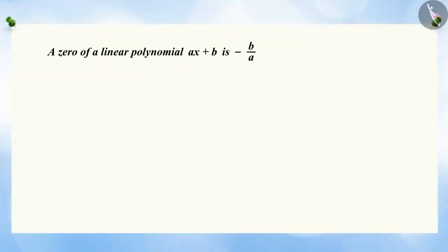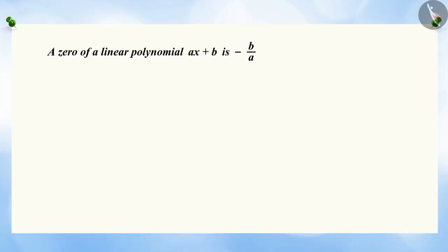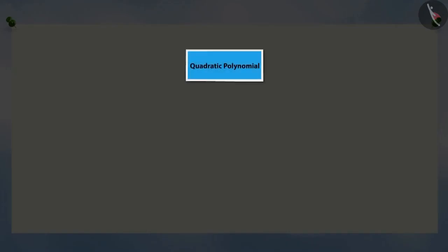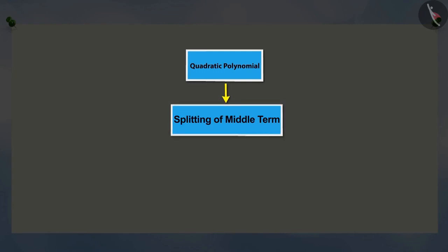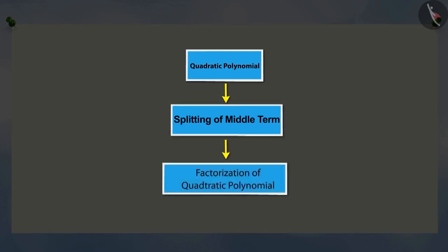In your previous class, you have learned that a zero of the linear polynomial AX plus B is negative B by A. Do you know that by splitting the middle term of a quadratic polynomial, it can be factorized?